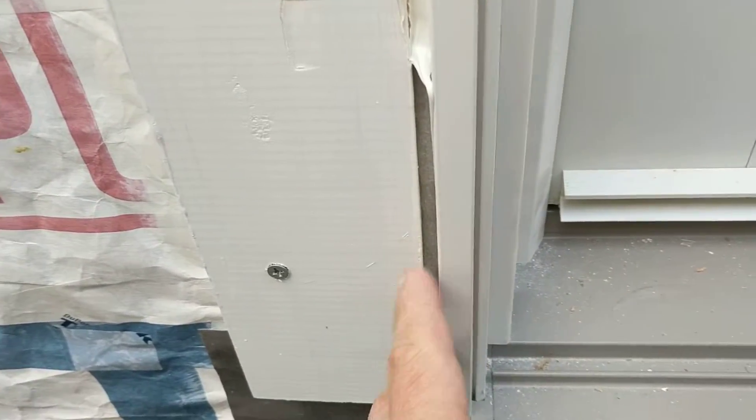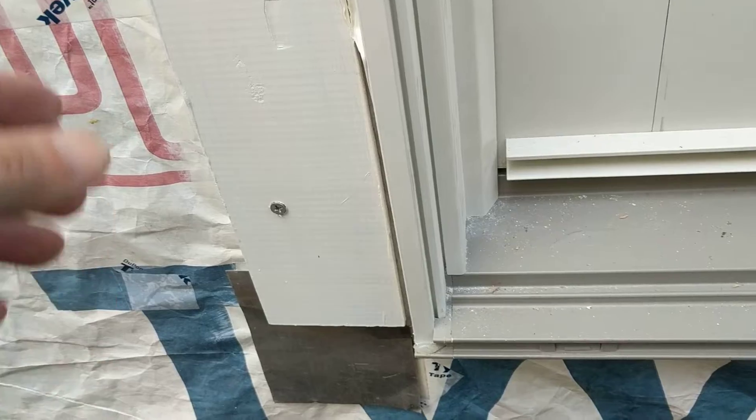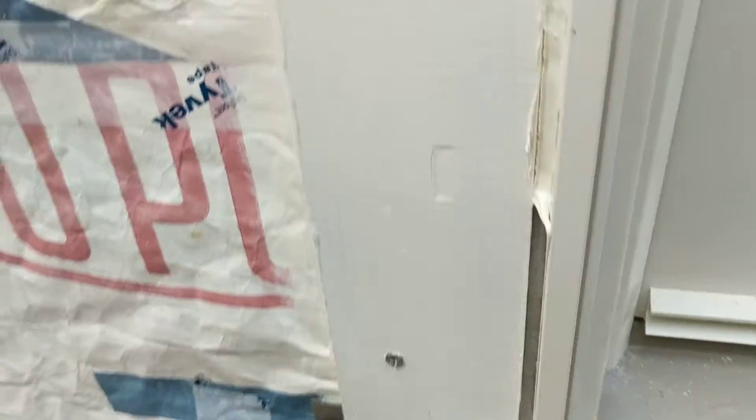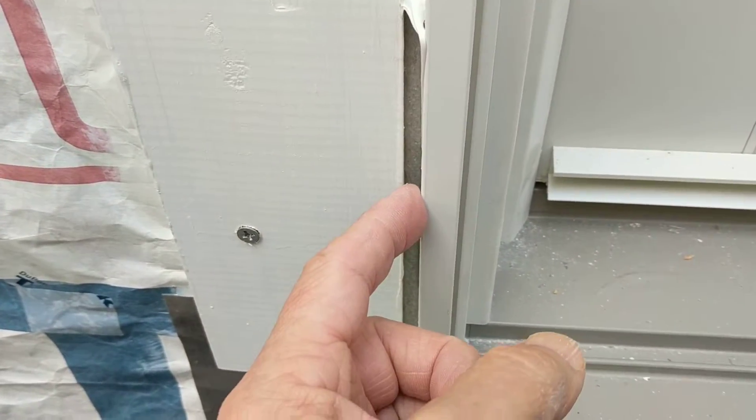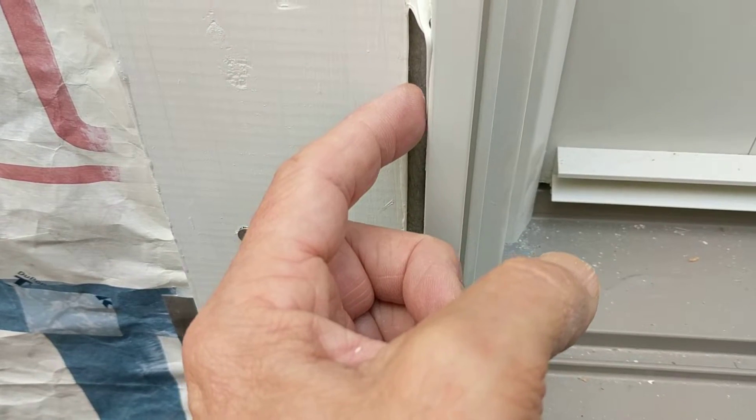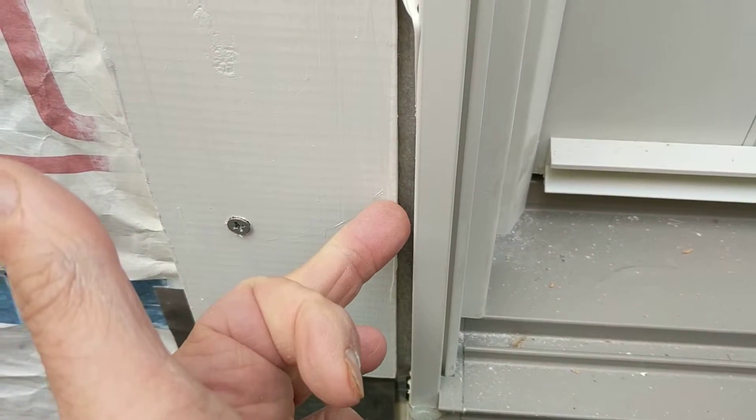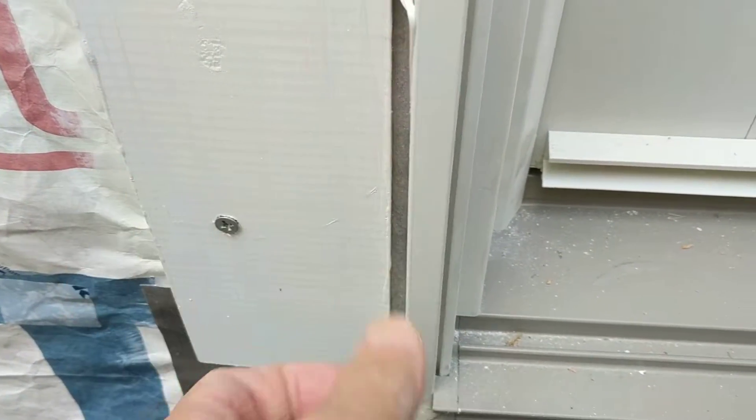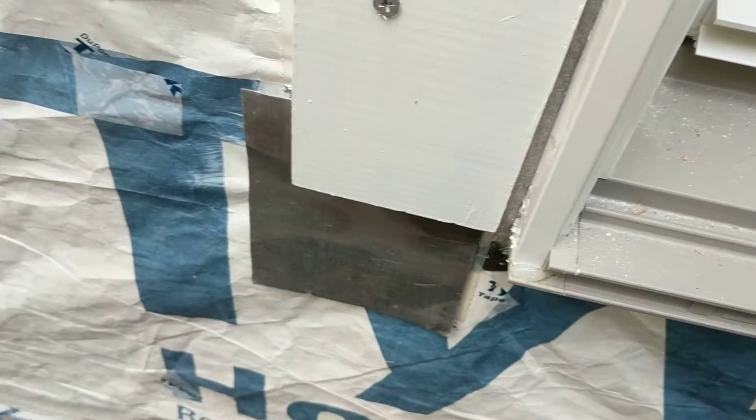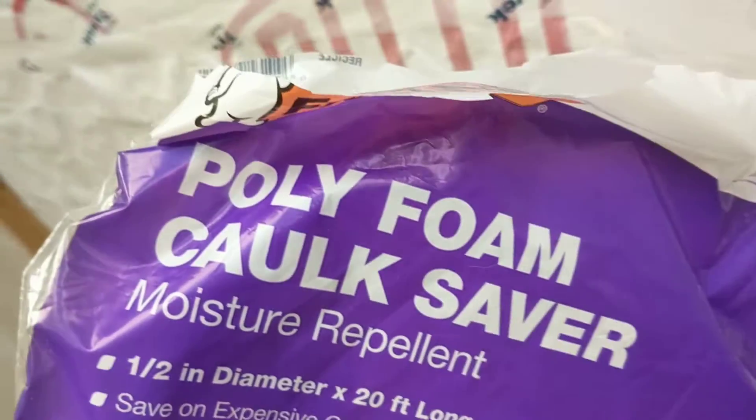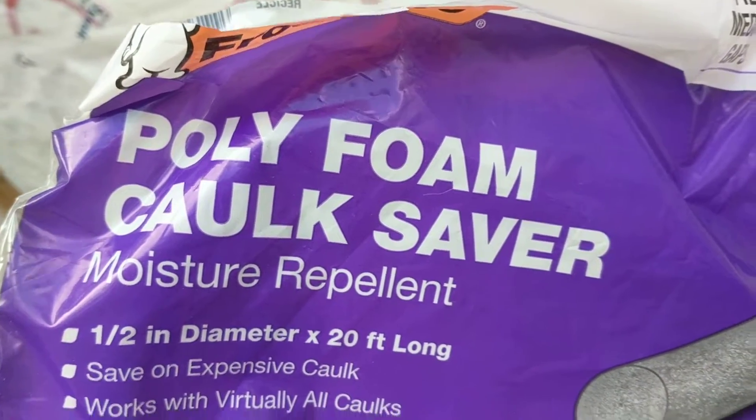This is the next step on the French door installation: caulking the quarter-inch gap between the trim board and the door using half-inch backer rod.